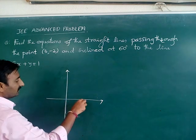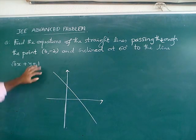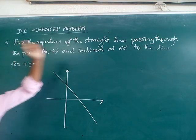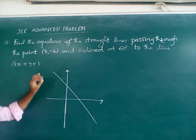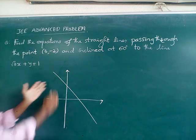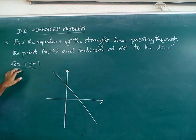What they have given here is there is a line which is root 3x plus y equal to 1. You need to find one of the straight lines which makes 60 degrees with this line, as well as passing through this point. This line what I have drawn is root 3x plus y equal to 1.